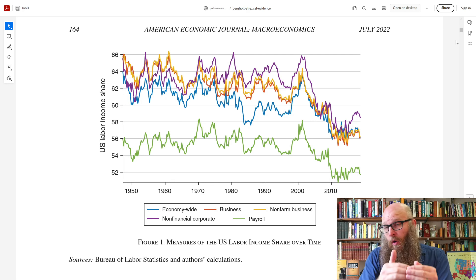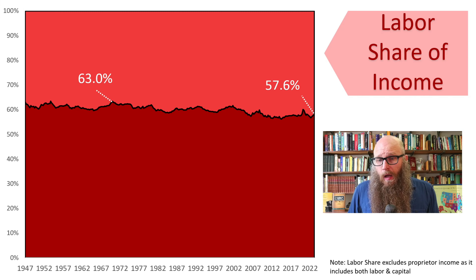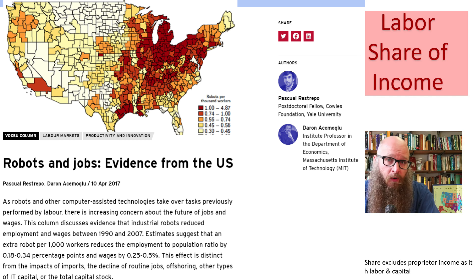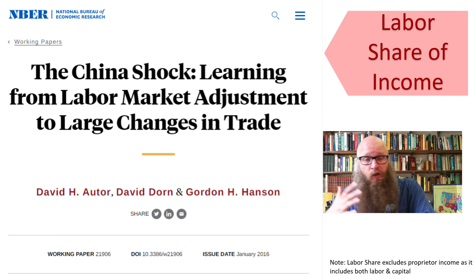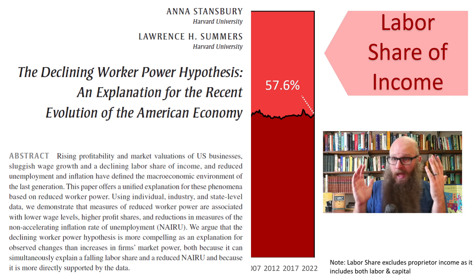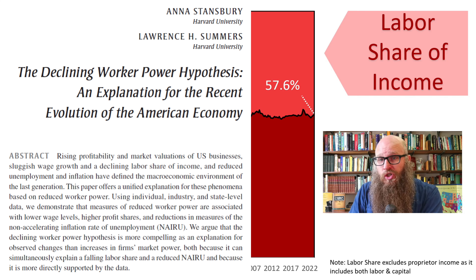The question is: will this decline continue, or are we in a new equilibrium? A lot of prominent hypotheses have been put forward. Have increases in robots and automation simply replaced labor rather than creating new tasks for labor to do? Has globalization moved a lot of labor-added value to other countries? My personal opinion is that the decline in labor bargaining power explains most of this — if labor doesn't have the same negotiating power, they won't be able to bargain for the same share of the pie.